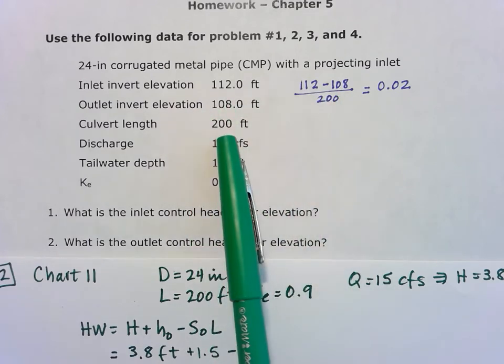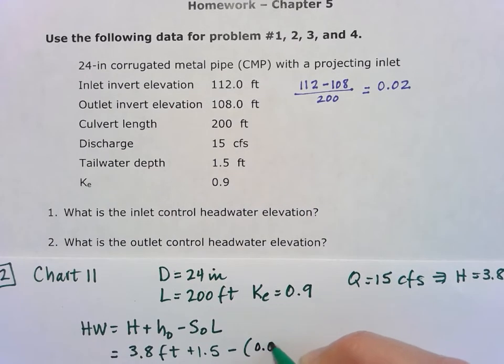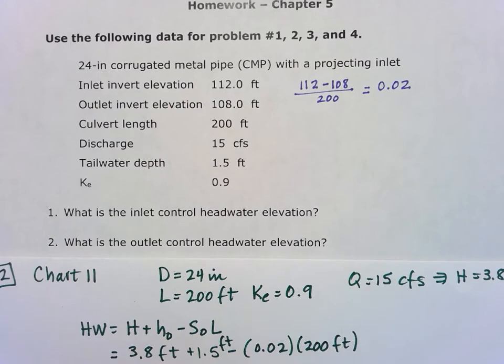So that gives us a slope of 0.02, or 2 percent, and that runs over that whole 200 foot length. And that is feet as well.